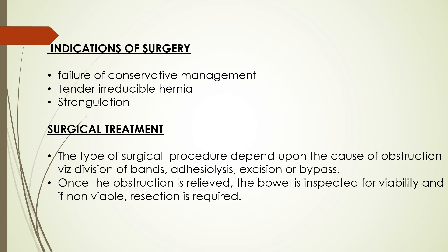When does the patient need to be operated? In cases of failure of conservative management, when there is a tender and irreducible hernia, or in cases of strangulation as discussed before. The type of surgical procedure depends upon the cause of obstruction, and once the obstruction is relieved, the bowel is inspected for its viability. If it is not viable, resection is required.